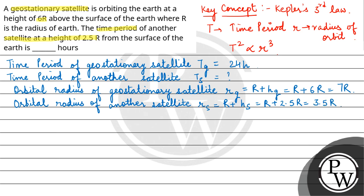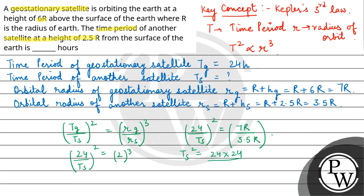Now using Kepler's law, what is the relation? TG upon TS square is equal to RG upon RS cube. TG value we have is 24, TS we need to find out. RG we have as 7R and RS is 3.5R. So 24 upon TS square is equal to, the right hand side becomes 2 cubed, so TS square will be equal to 24 into 24 upon 8.